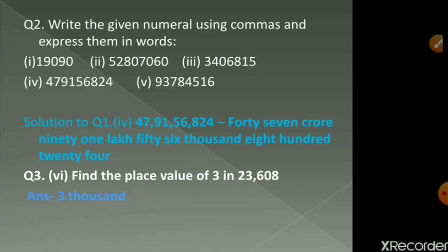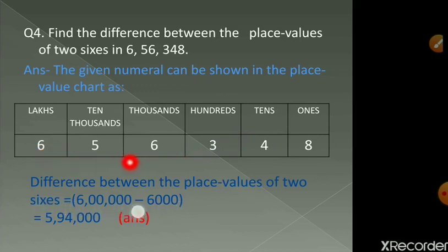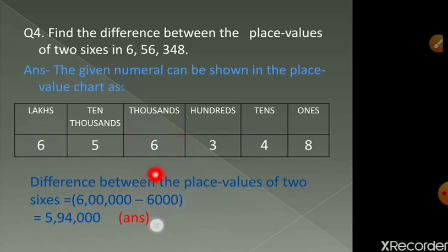Question number 4: find the difference between the place values of the two sixes in 656348. The place value chart is given here — we can see that one 6 is in the lakhs place and another 6 is in the thousands place. So we write the numbers and simply subtract them: six lakh minus six thousand. The answer is five lakh ninety-four thousand.